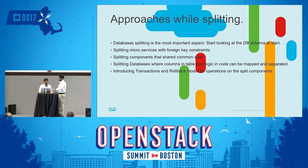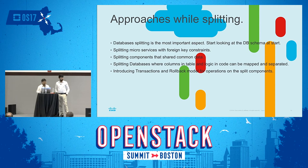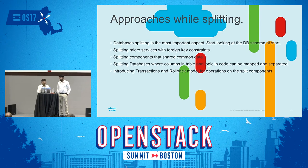If you have columns in a table and logic in the code that can be mapped and separated, there might be some data replication, but it's for the greater good. Most importantly, handle the migration in a proper transaction and rollback-based model. In a monolith, if something errored, it was contained. In a distributed cloud-native application with multiple microservices, if your request is served by three microservices and then errors on the fourth, you need to ensure the system's sanity is maintained when you roll back.